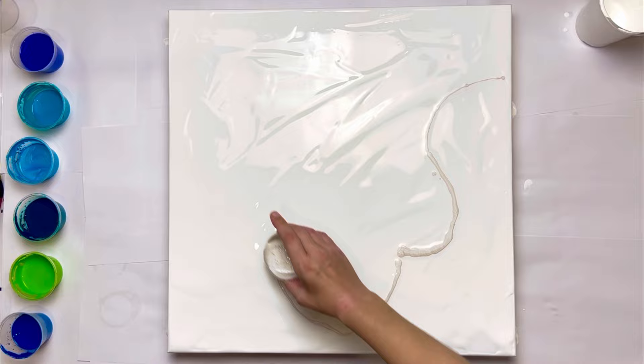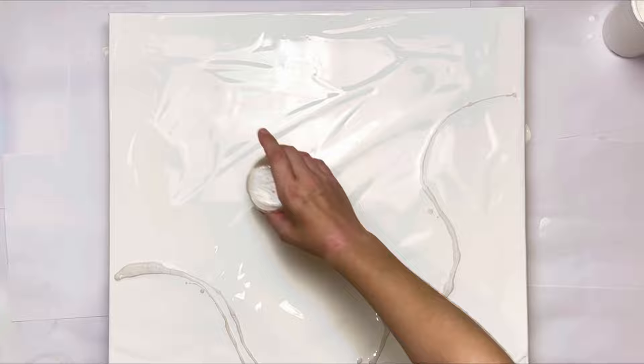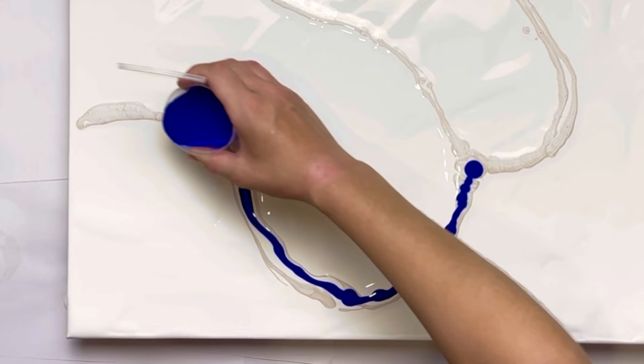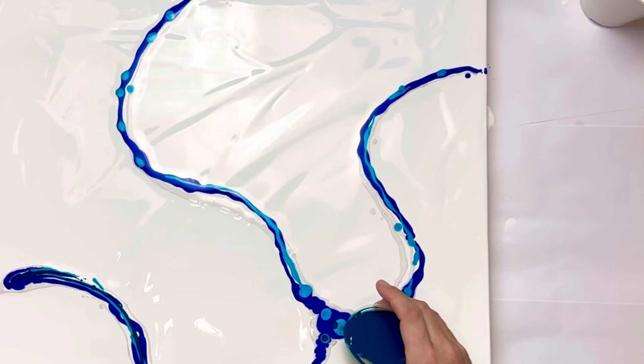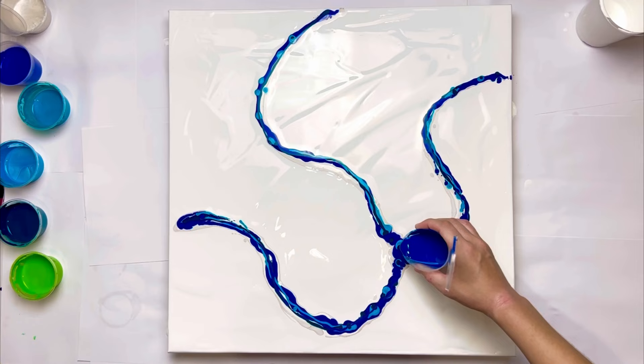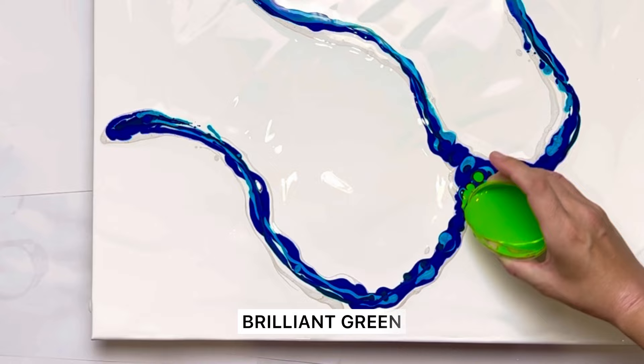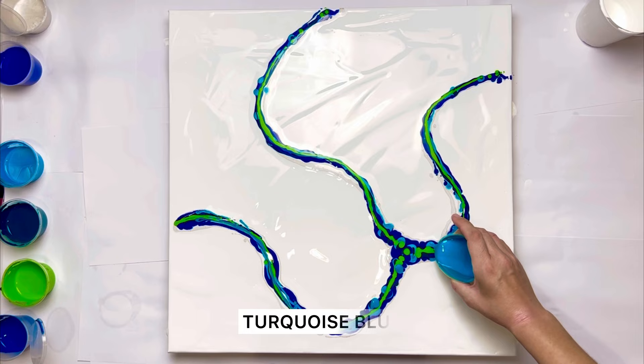I use titanium white for the base and the first color for the floor I use pearl white. And this is phthalo blue. Iridescent blue green. And this is greenish blue mix. I decided to add more phthalo blue. Now let's set some contrast. This is brilliant green.